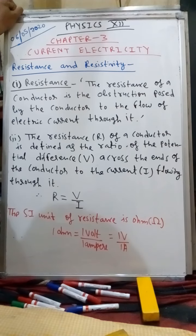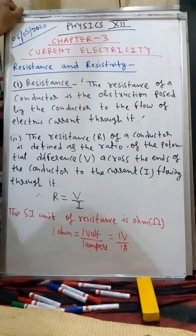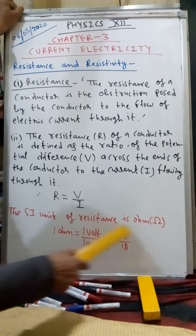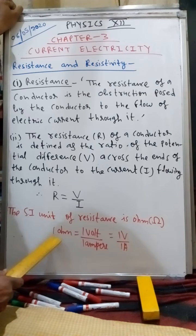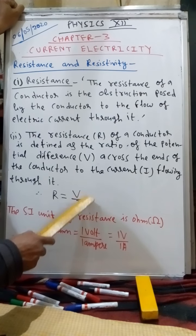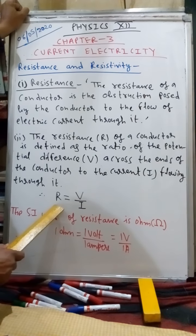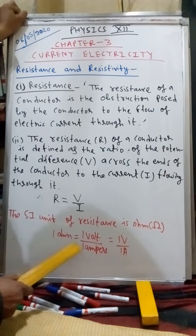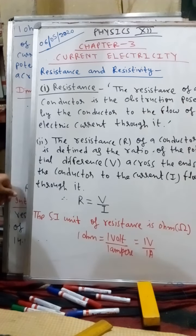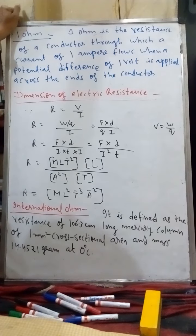The SI unit of resistance is the Ohm. 1 Ohm is defined as: when 1 Volt of potential difference is applied across a conductor and 1 Ampere of current flows through it, the resistance produced is called 1 Ohm. So, 1 Ohm = 1 Volt / 1 Ampere (1V/1A).